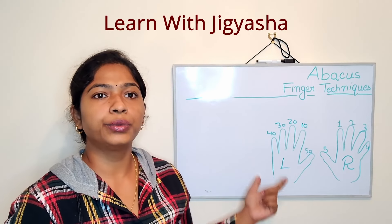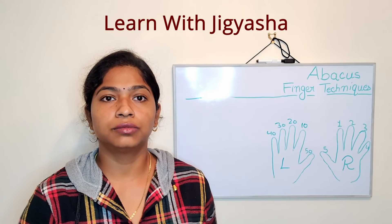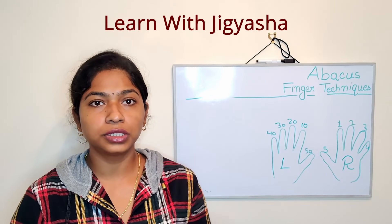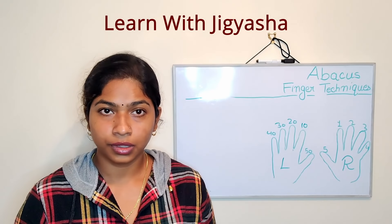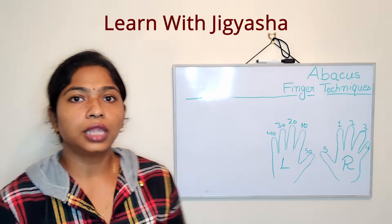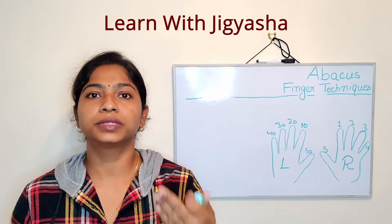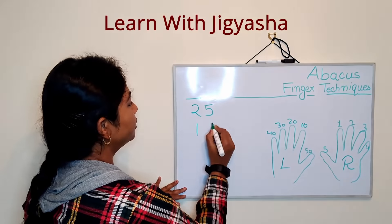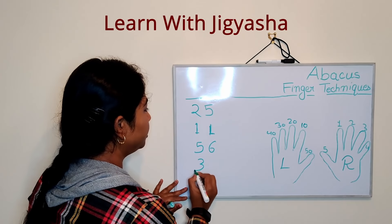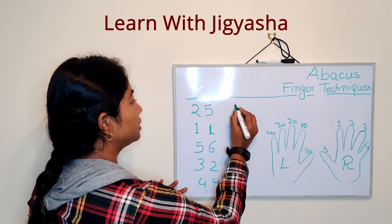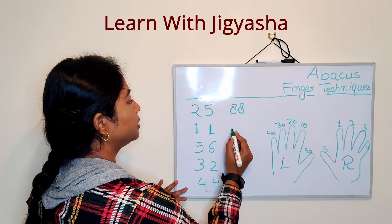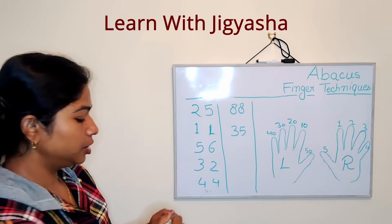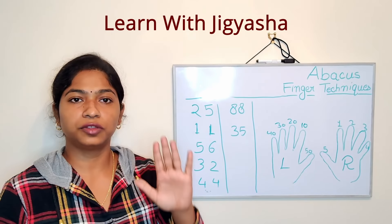We have already represented 1 to 9 and 10 to 90, but what about other numbers like 11, 12, 33, 45, and so on up to 99? These are all two-digit numbers from 10 to 99. Let me write some numbers and show you how to represent them on our hands.